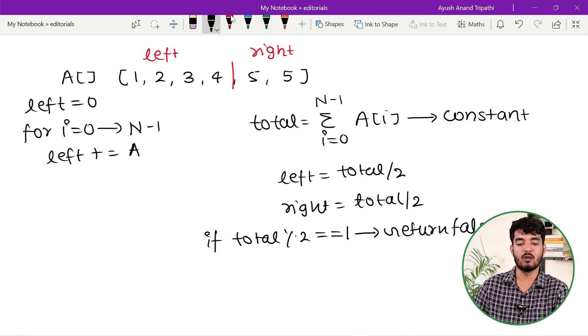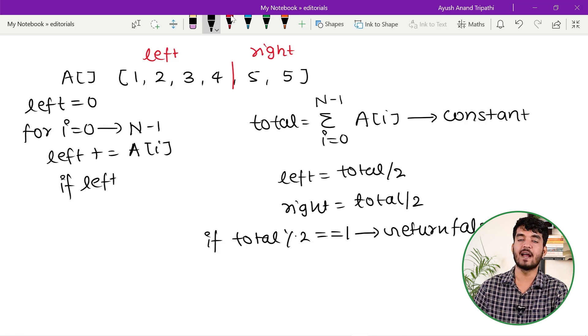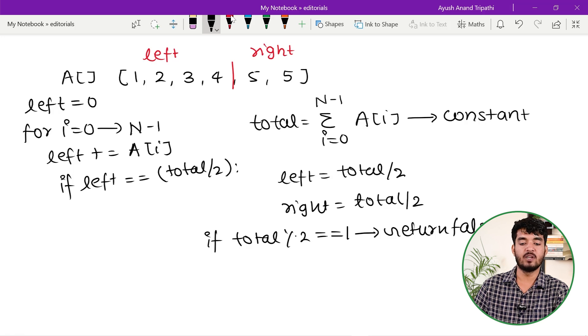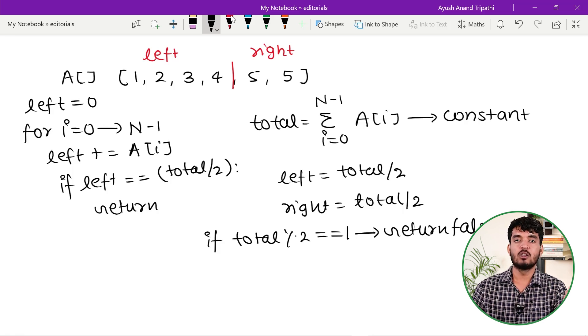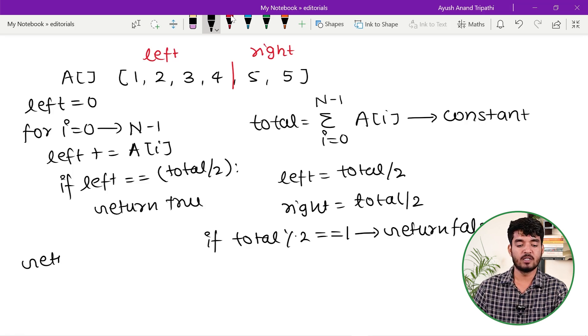Then check if left == total/2. If this is the case, then the left sum is total/2 and the right sum would definitely equal total/2 as well, because the entire sum is constant. So simply return true. Otherwise, after checking all possibilities from 0 to n-1, if we didn't find any case, simply return false after the for loop.